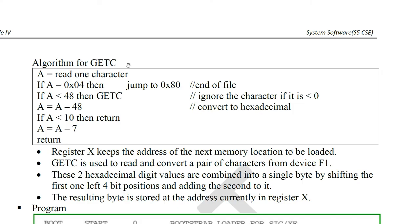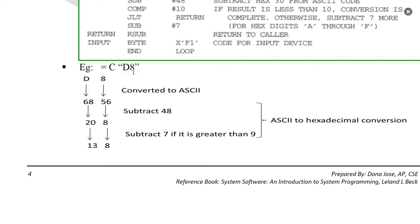Example: consider the two characters D and 8. For D, the ASCII value is 68. Subtract 48 to get 20. Since 20 is greater than 9, subtract 7 more, giving result 13. So decimal 13 equals hexadecimal D. For 8, the ASCII value is 58. Subtract 48 to get 8. Since 8 is not greater than 9, the result stays as 8. So the combined byte is D8.